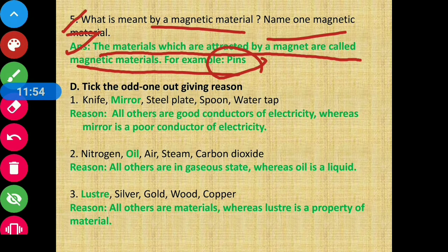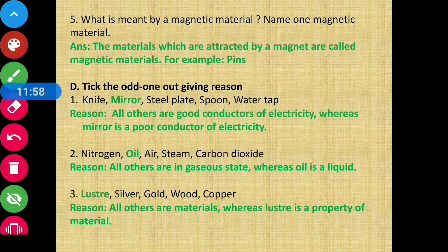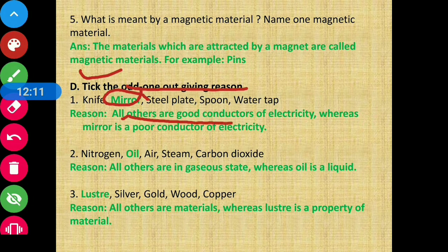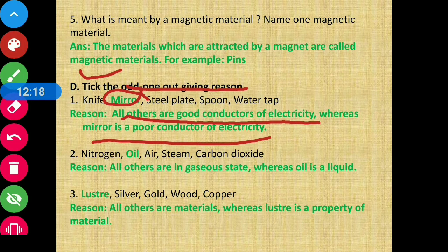Section D: Take the odd one out giving reasons. Question 1: Knife, mirror, steel plate, spoon, water tap. The odd one out is mirror. Reason: All others are good conductors of electricity, whereas mirror is a poor conductor of electricity.